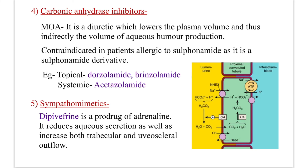Fourth class: carbonic anhydrase inhibitors. These are diuretics that work on the PCT. The mechanism is that they lower plasma volume, thereby indirectly reducing aqueous humor production — since aqueous humor originates from blood/plasma. They are contraindicated in patients allergic to sulfonamides, as they are sulfonamide derivatives. Topical examples: dorzolamide and brinzolamide. Systemic example: acetazolamide.